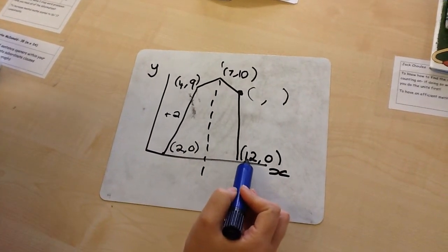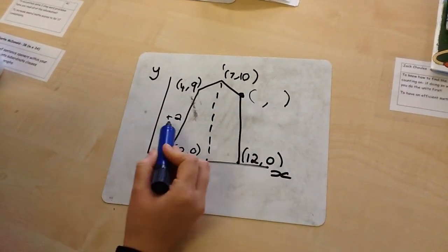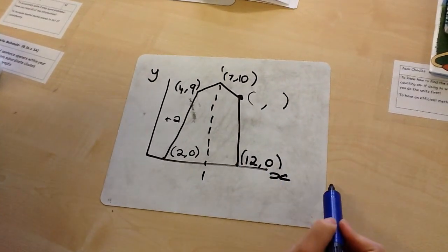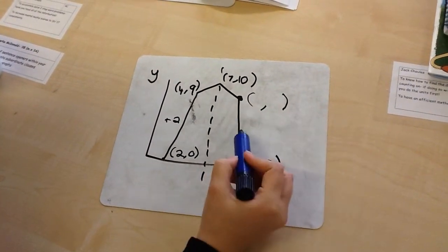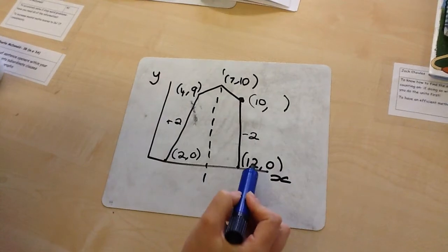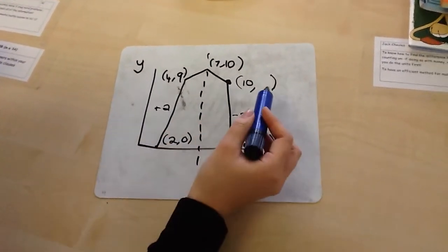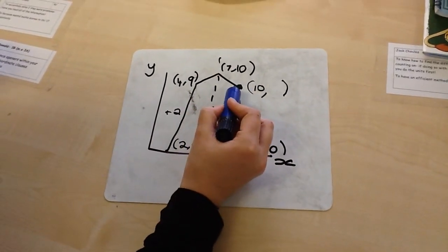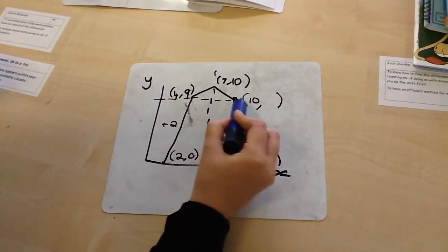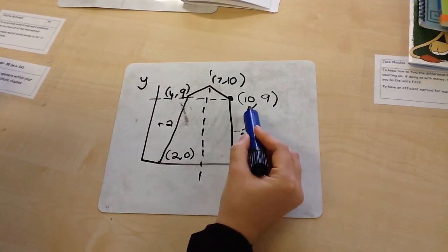I've got 12 here, and I know the distance between this point and this point is going to be exactly the same. It isn't going to be plus 2 because I'm not going this way — I'm working this way — so it's actually going to be minus 2. My coordinate for my x-axis would be 10 because it's 12 minus 2. Then I need to find my y-axis. Again, it's symmetrical and they're on the same level, so I can draw my line across. This is 9, so this would be 9. My missing coordinate would be 10, 9.